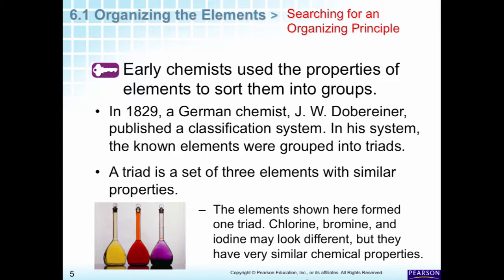Right here in this picture, we have three elements that were in the same triad: chlorine, bromine, and iodine. These are elements that are never alone. Chlorine looks a little yellow in this picture but in real life you'd see it as green. Bromine is reddish-brown and iodine is purple. So he classified things that had very similar properties, and we're going to organize our elements because they have similar properties — this is the first organizing principle that we still use today.